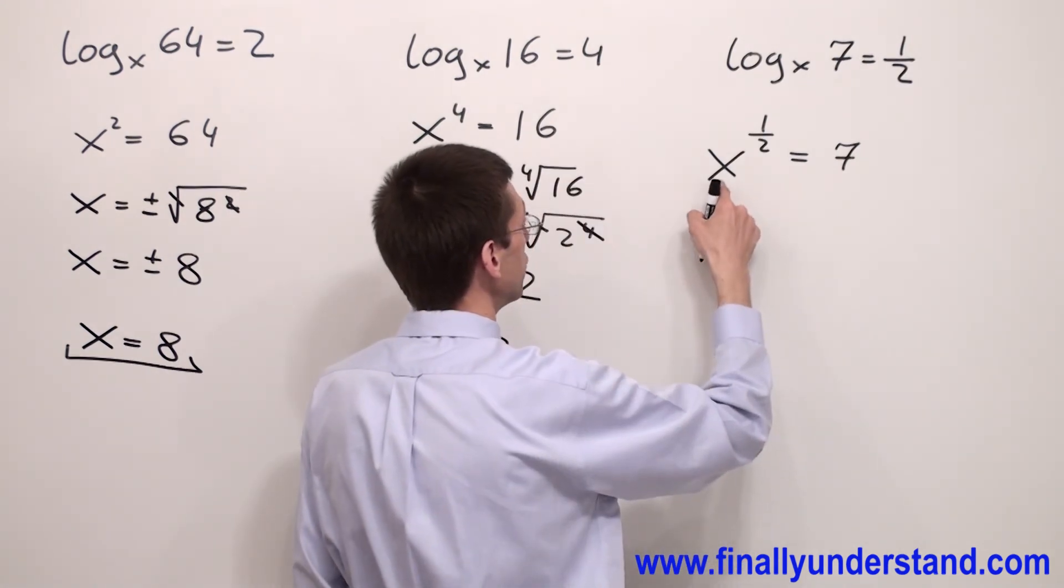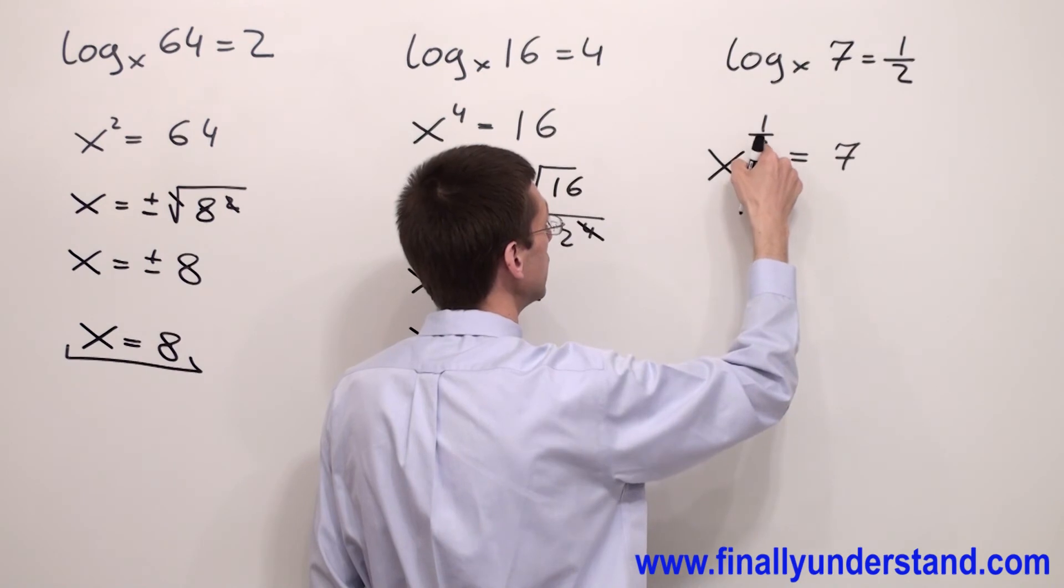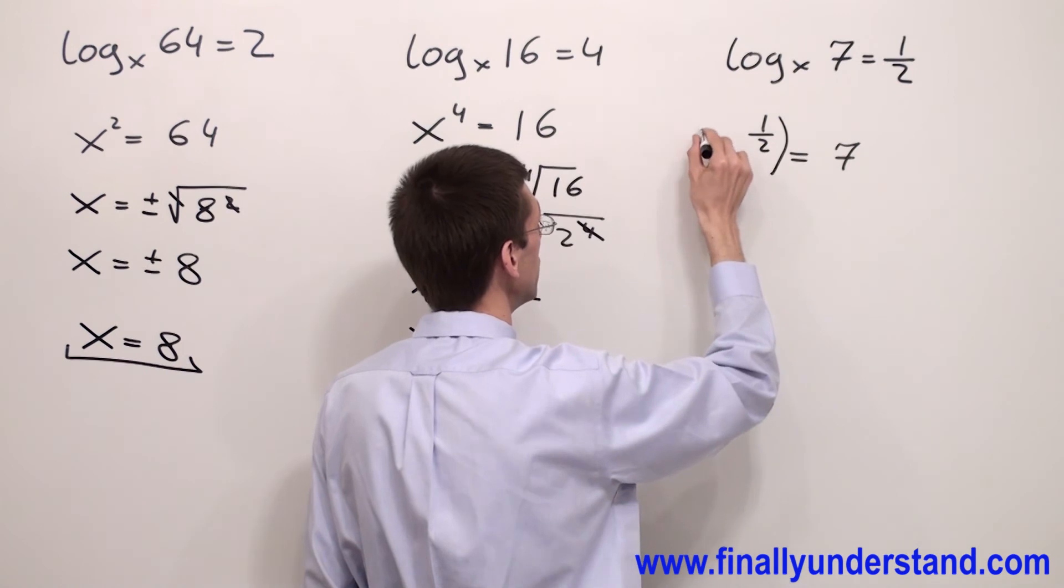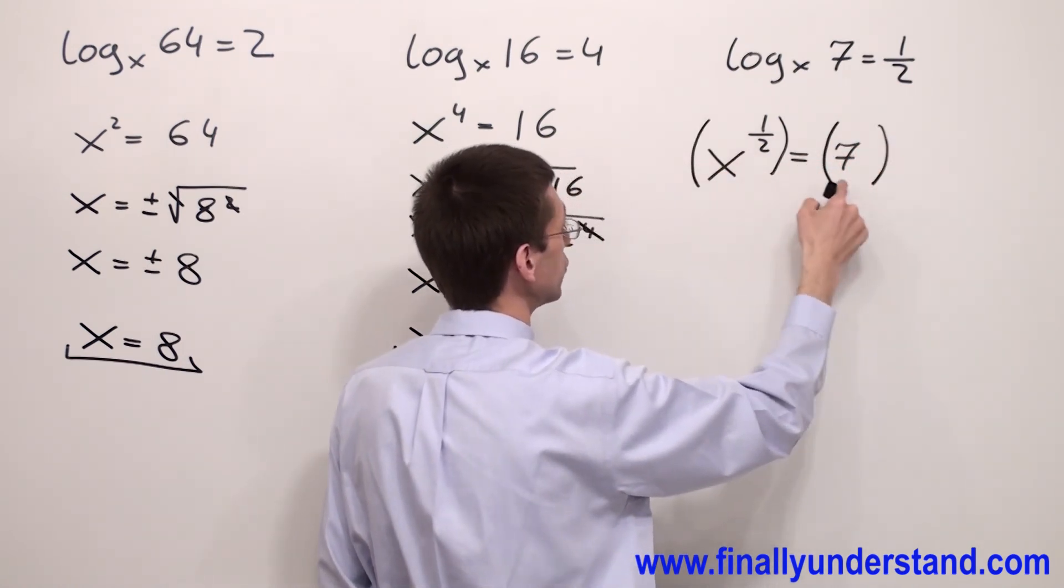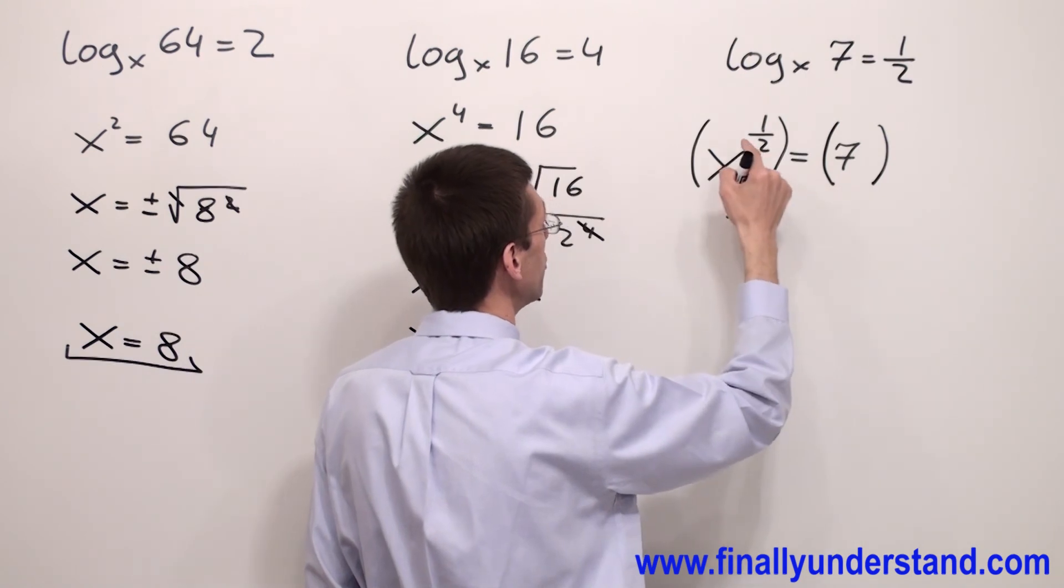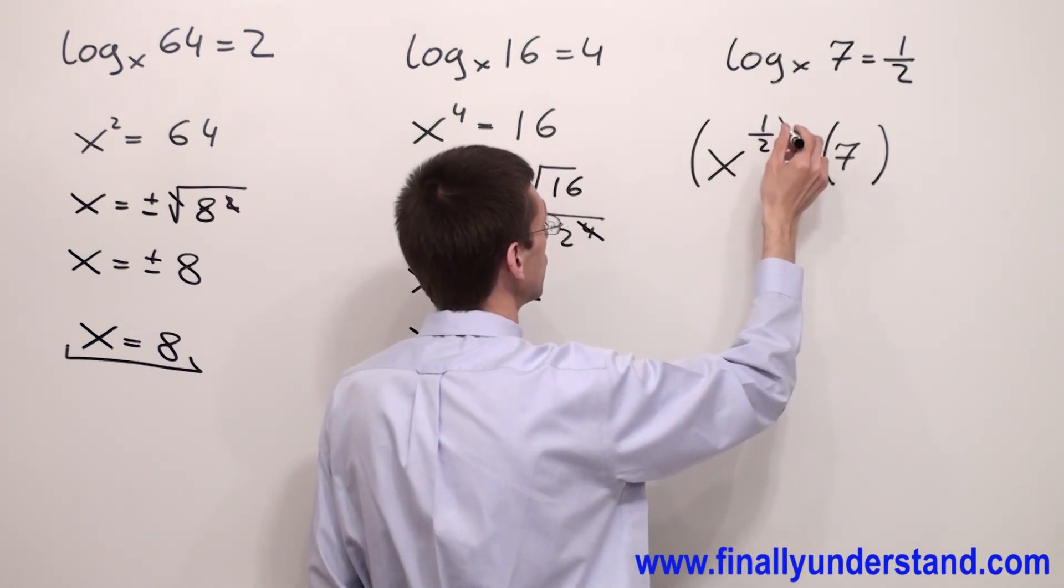In order to find value of x, I have to eliminate this exponent. How I can eliminate the fraction from the exponent? Simply by raising both sides of the equation to the power which is equal to the denominator of this fractional exponent.